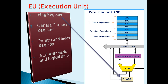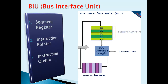There are four parts in the Execution Unit: first is the Flag Register, second is the General Purpose Register, third is the Pointer and Index Register, and fourth is the ALU, that is Arithmetic and Logical Unit. The second functional unit of the 8086 microprocessor is the Bus Interface Unit, which has three parts: first is the Segment Register, second is the Instruction Pointer, and third is the Instruction Queue.